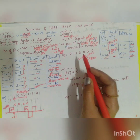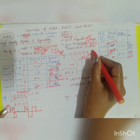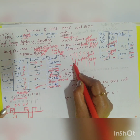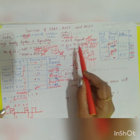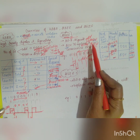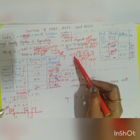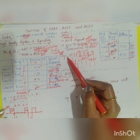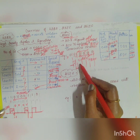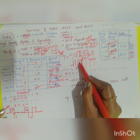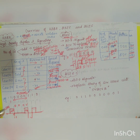Example for B3ZS: '0 1 1 0 0 0 0 0'. The leading 0 is represented as 0, then '1 1' → positive, negative bipolar. The next three zeros are replaced. Assuming a prior violation, we have two '1's after it — even — so use B0V. Since the previous bit was negative, B is positive, then 0, then V violates to positive. The result: B0V = positive, 0, positive.